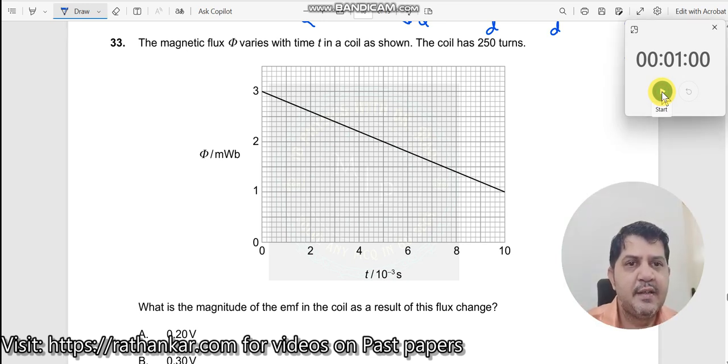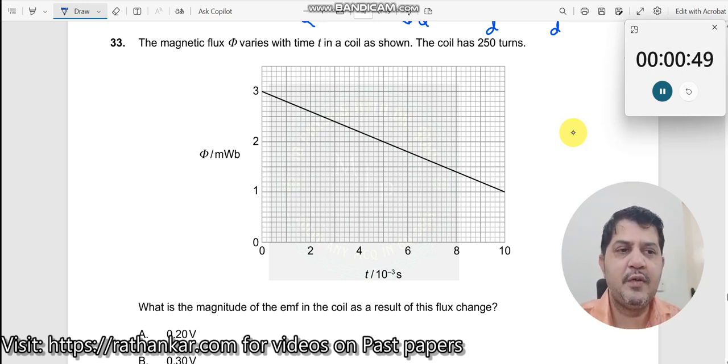Question number 33. The magnetic flux varies with time t in a coil as shown. The coil has 250 turns. What is the graph here? This is phi versus t. The moment there is a phi versus t graph, what do you understand?